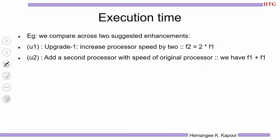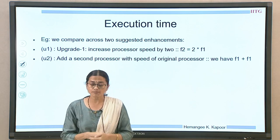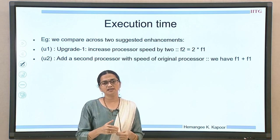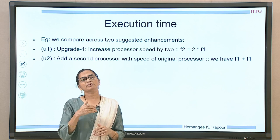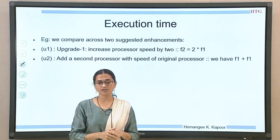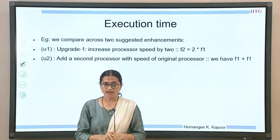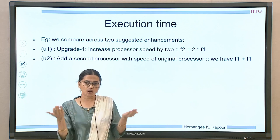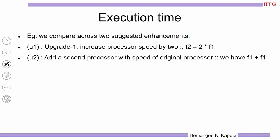We will take an example. Suppose we want to compare two enhancements. As an engineer, you were advised to improve the system: one engineer suggested doubling the frequency of the processor, and the second suggestion is to add one more processor to the system. U1 says the new frequency F2 is twice that of the old frequency F1, and U2 means we have two processors both running on the same frequency F1.